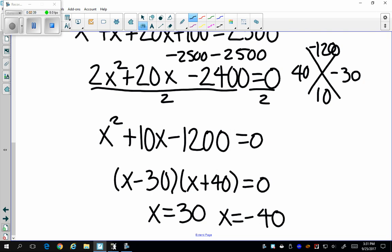I need to remember I can't have a negative distance. So I want to immediately cross out x equals negative 40 since I can't have that. So my height is 30 feet. And that's going to be my answer.